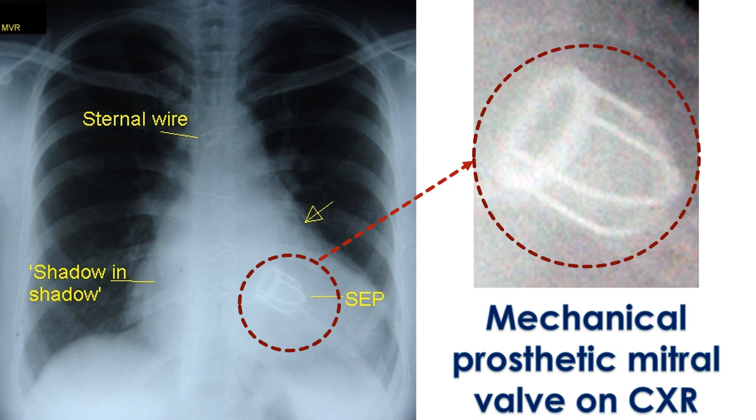The target range of INR values needed depends on the indication for using it. In most cases, the target INR value is 2 to 3. If the value obtained in the test while on medication is higher, the dose of the medication is reduced, and vice versa. In certain cases, as with a mechanical prosthetic mitral valve, a higher INR value of 2.5 to 3.5 is recommended.